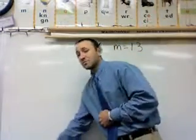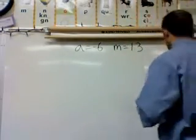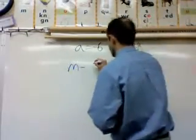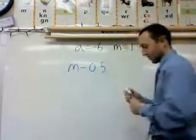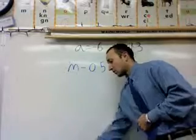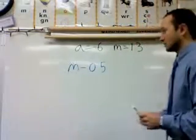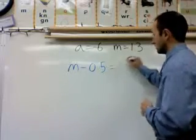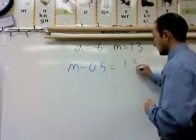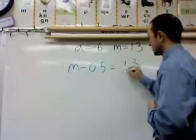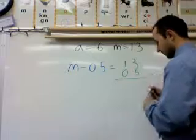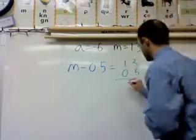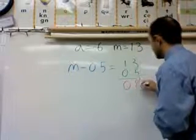So let's look at some examples of how to evaluate expressions. Our first expression will be M minus 0.5. Now I want to find the answer to this. The first thing I want to do is rewrite this expression. We know M is equal to 1.3, and I'm going to subtract 0.5 from it. After doing the subtraction, I come up with an answer of 0.8.